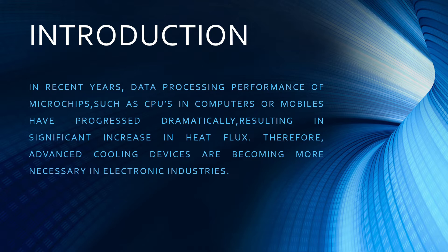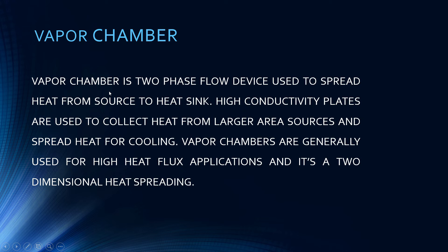So your electronic component or device will get damaged. For this reason, we use the vapor chamber. A vapor chamber is a two-phase flow device used to spread heat from a heat source to a heat sink. High conductivity plates are used to collect heat from larger area sources and spread heat for cooling. Vapor chambers are generally used for high heat flux applications, and it's a two-dimensional heat spreading device.